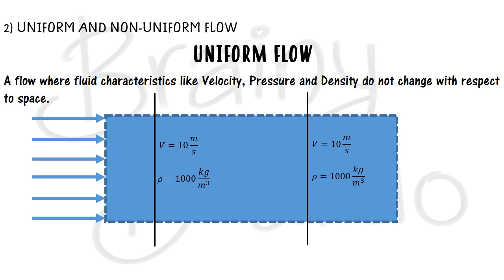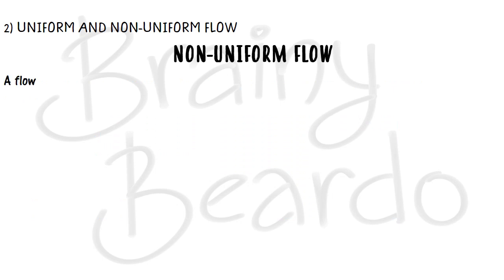At any other section I define, if the velocity is still 10 m/s and density is still 1000 kg/m³, such a flow is called uniform flow. Note: if at a different time the values change at the first section, they should correspondingly change at the second section as well. Uniform and non-uniform flow are defined with respect to position, not time.